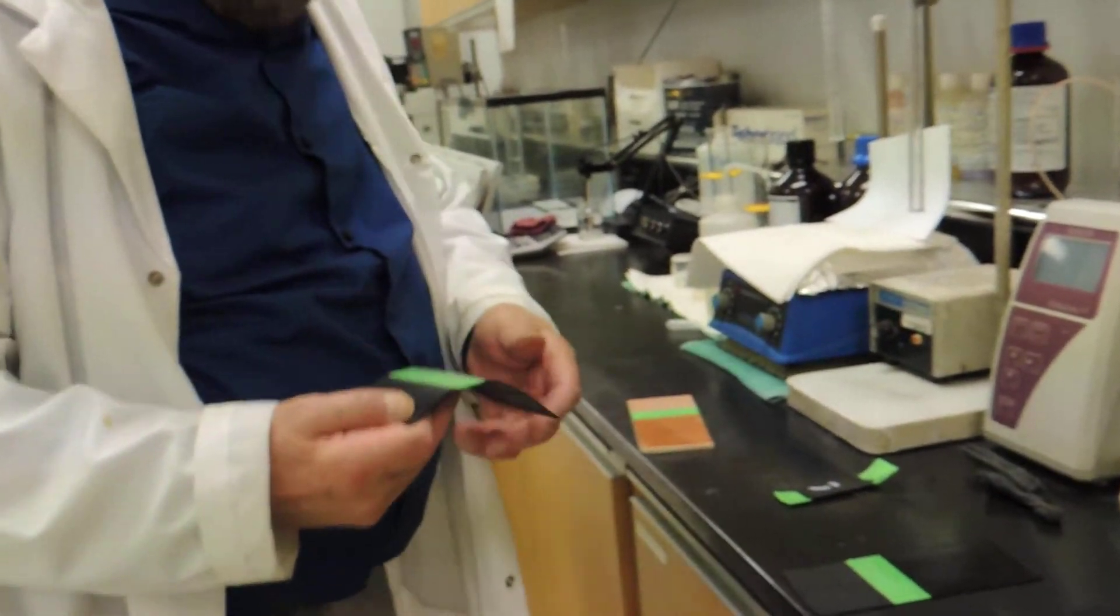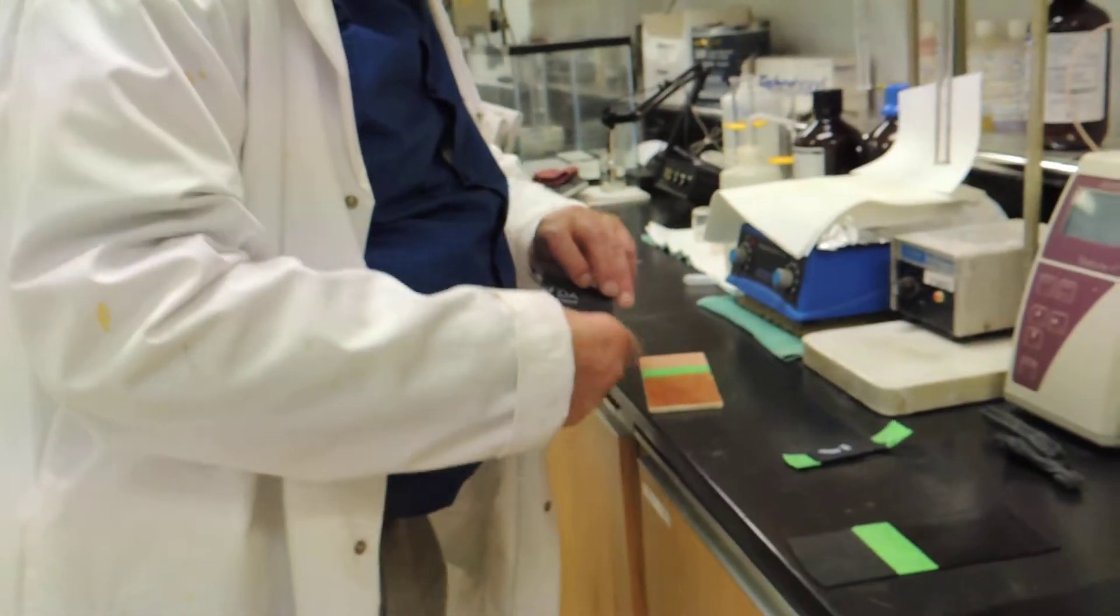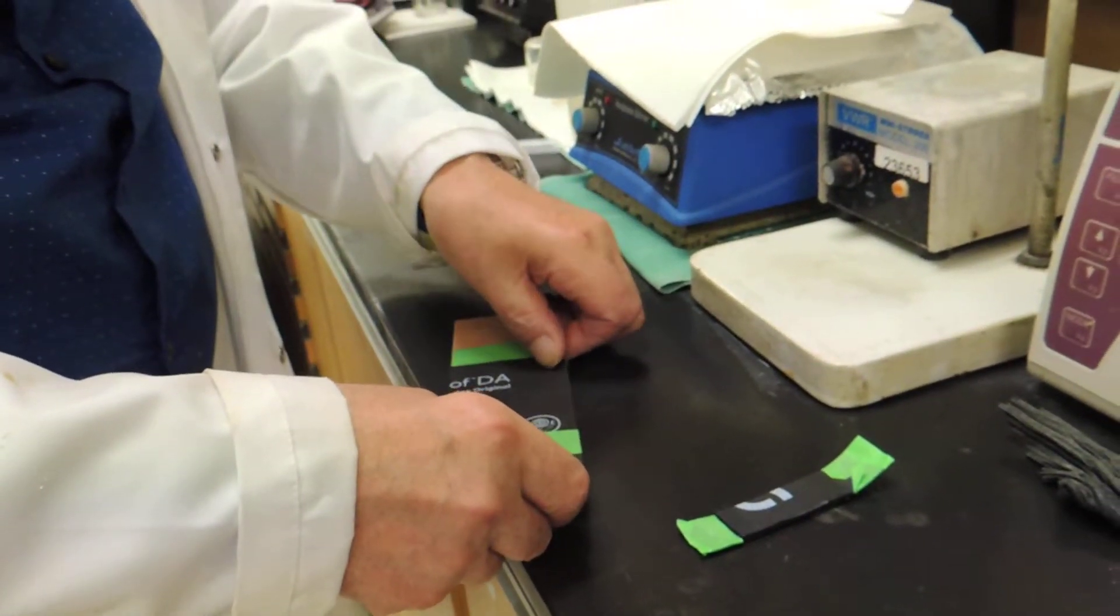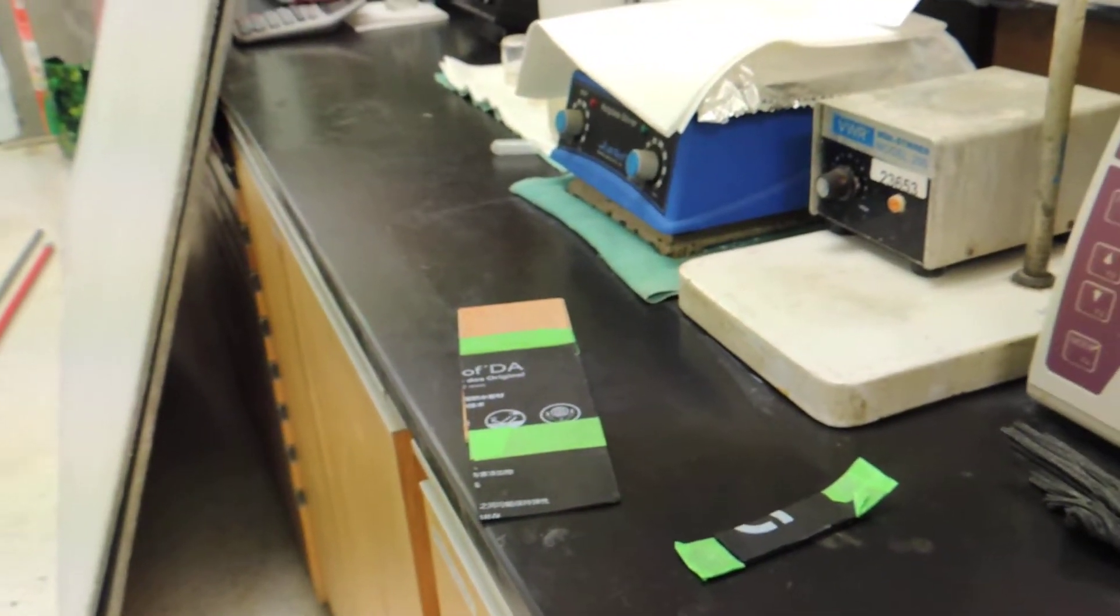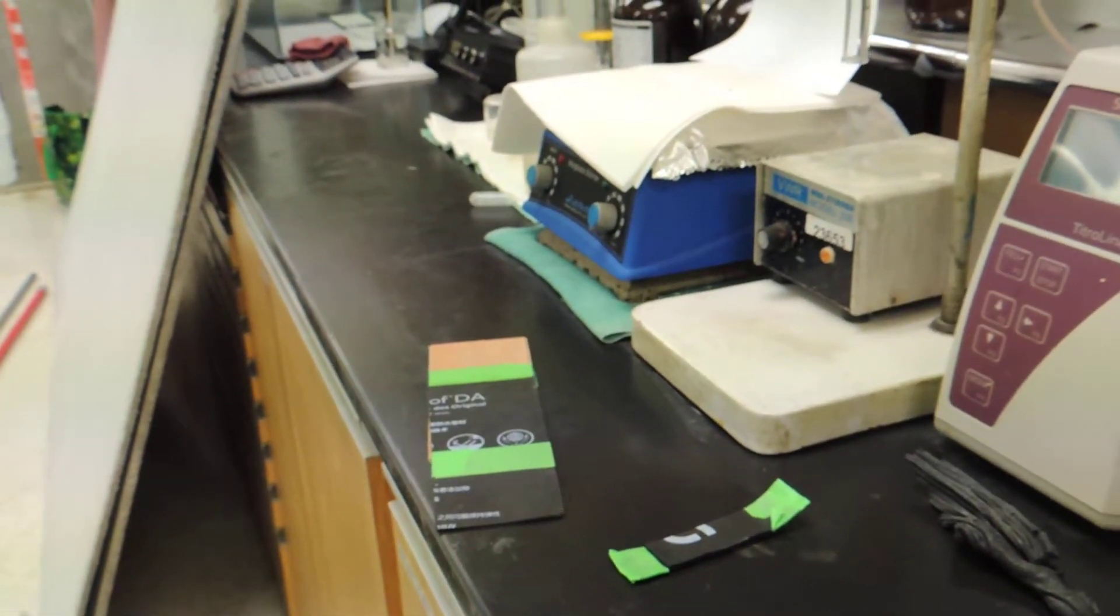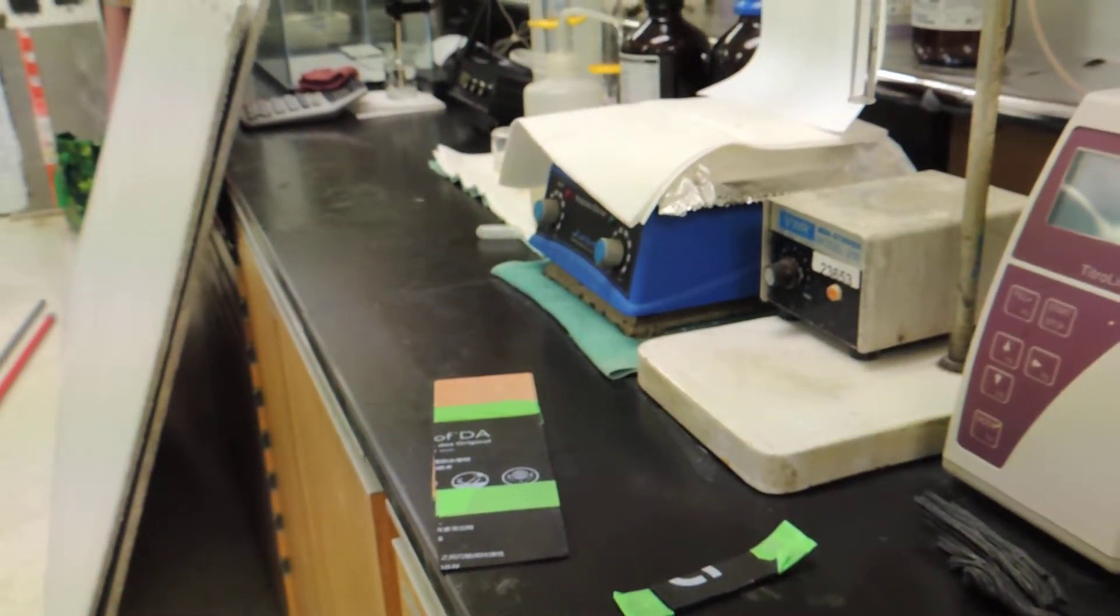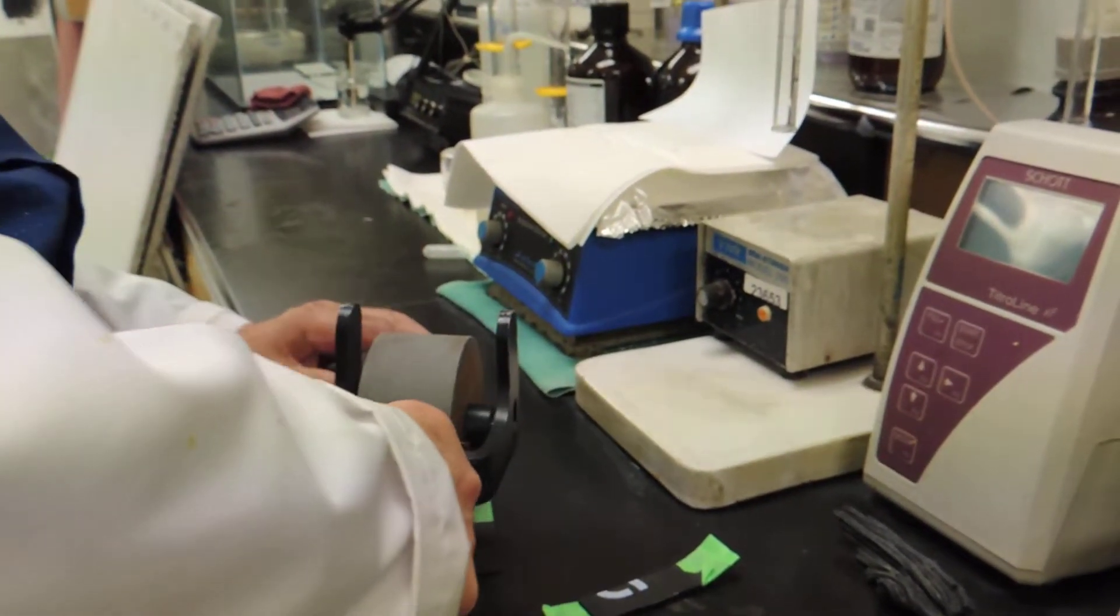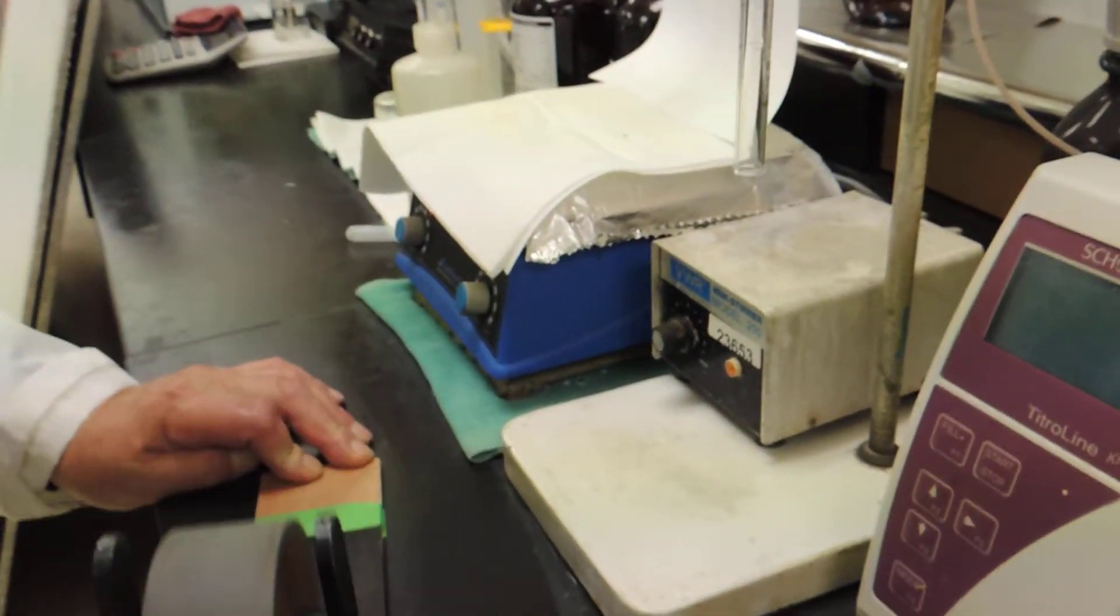We'll now try EPDM coated with BONTAC ECO1500 on some wood substrate, which we are attaching here. To ensure that we're applying equal pressure, we'll just put a two kilo roller on and apply some bonding pressure.